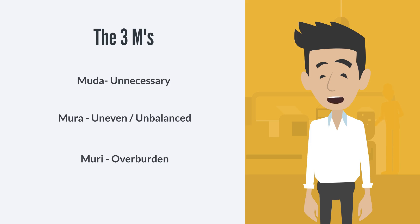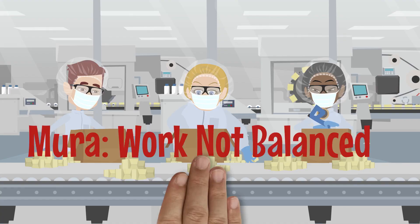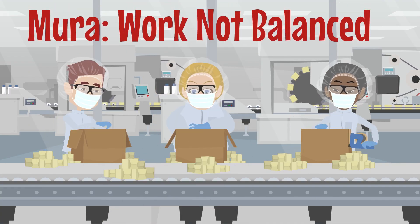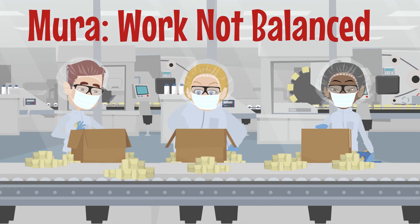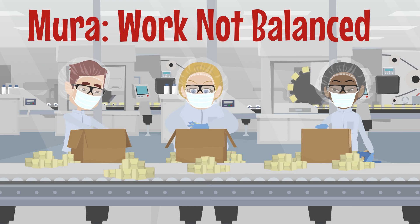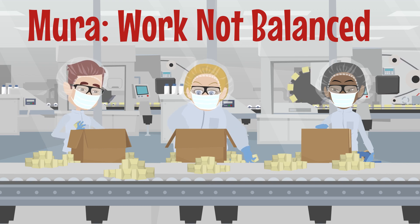Mura means unnecessary and reflects the so-called seven types of waste that we will be talking about next. Mura means unbalanced or uneven. Fluctuation in customer demand and variation of cycle times for different operations or operators are examples of Mura or unevenness.